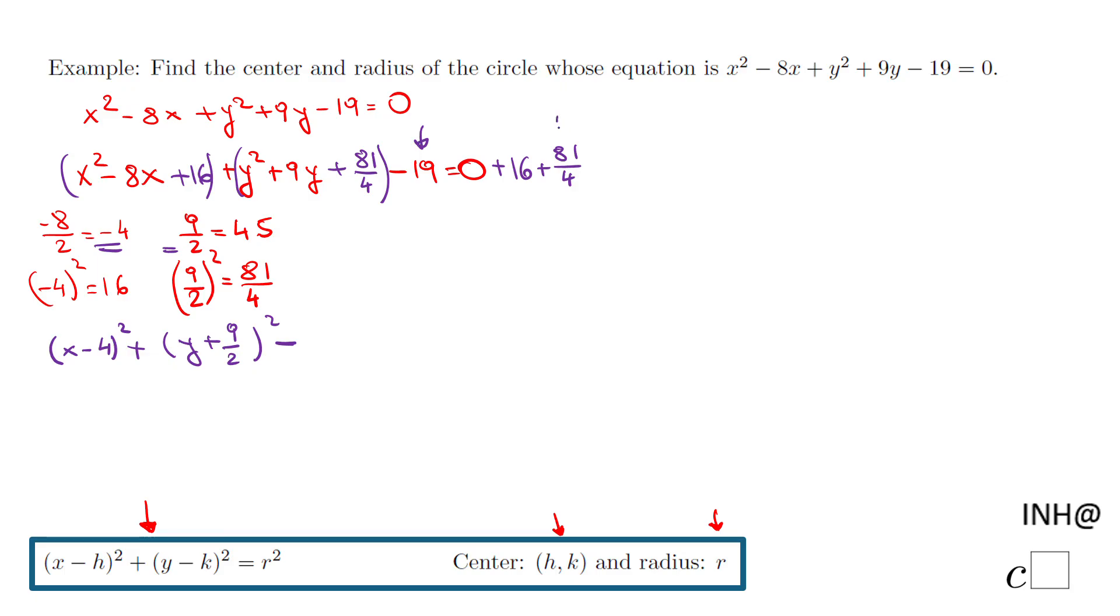Now looking to this 81/4 I'm gonna change that 19. 4 times 19 is 76, so 76/4. So this is -19. And again that 16, the same thing I'm gonna change it in a fraction: 4 times 16 is 64, so 64/4 + 81/4.